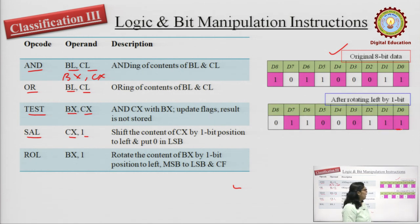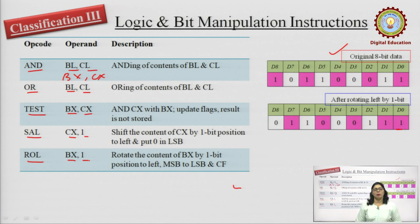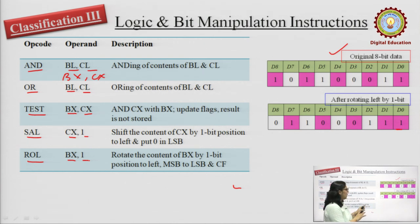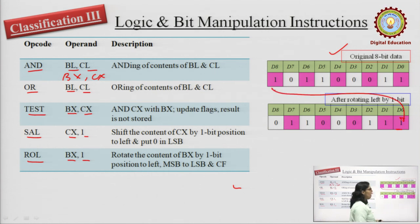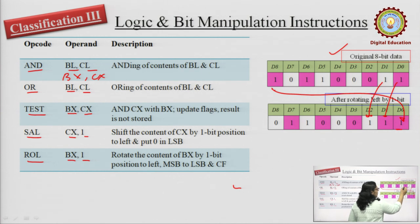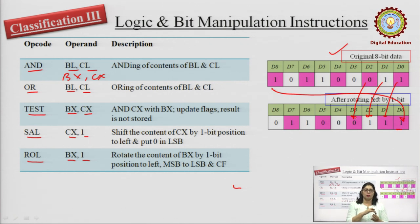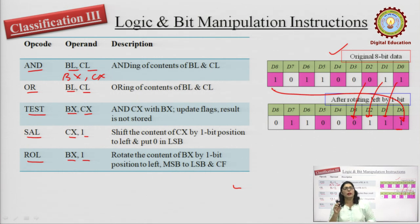For rotate: ROL stands for rotate left. ROL BX, 1 means rotate the 16-bit content of BX left by 1 bit. Using an 8-bit example to explain: what happens is the MSB becomes the LSB. So the MSB bit comes to the LSB position, and all other bits shift to the left. The small difference between shifting and rotating is: in shifting we insert zero at the LSB, but in rotation the MSB wraps around to the LSB.